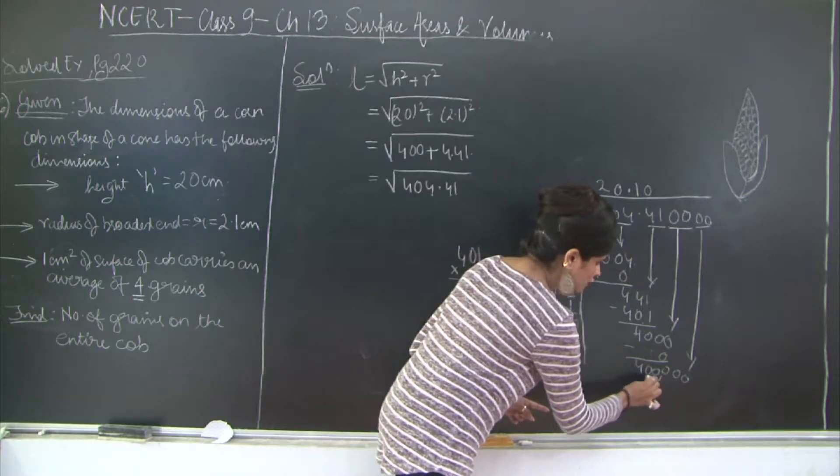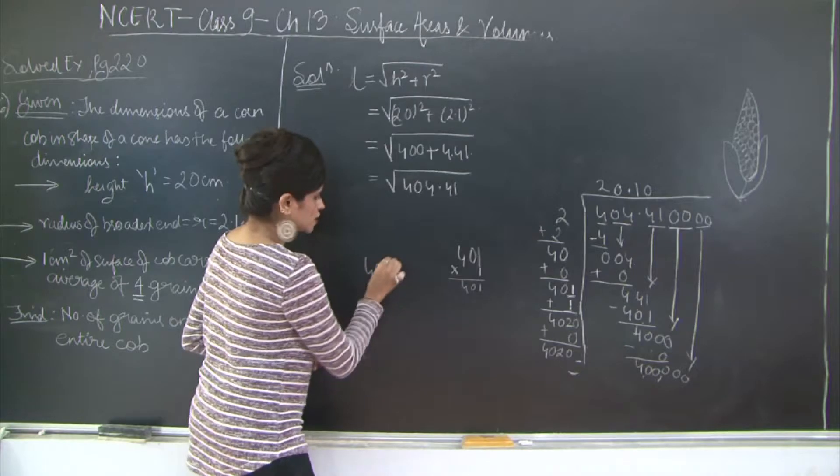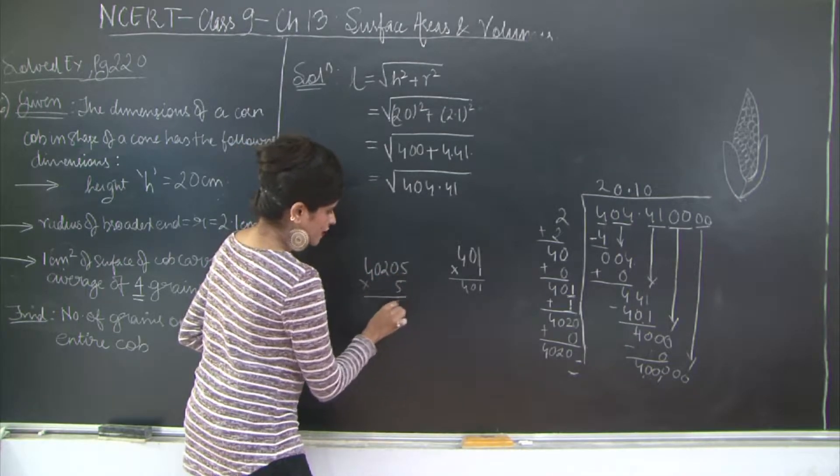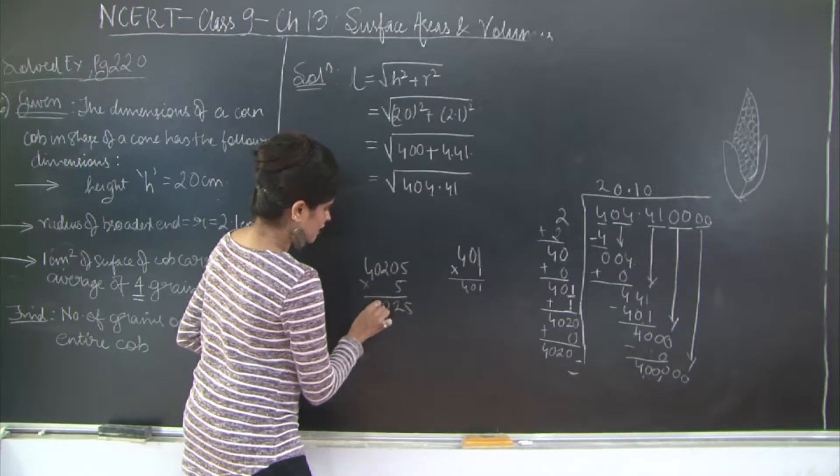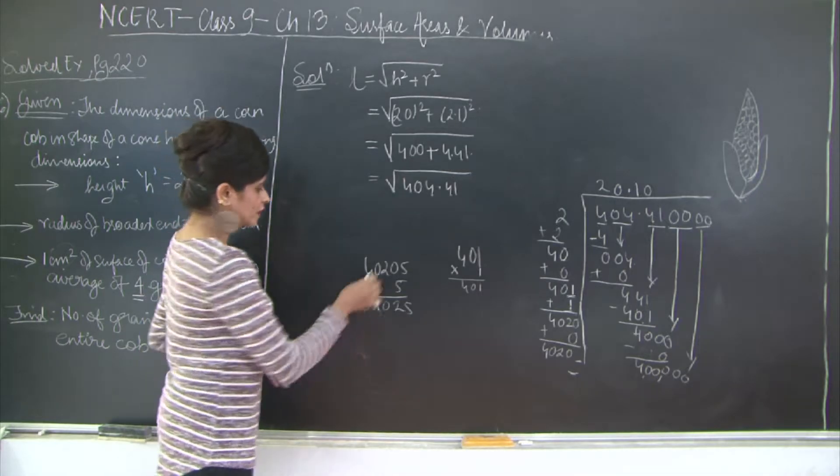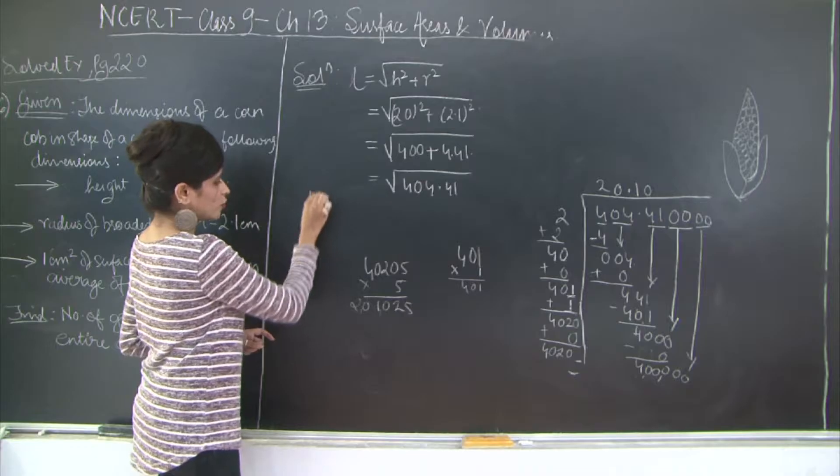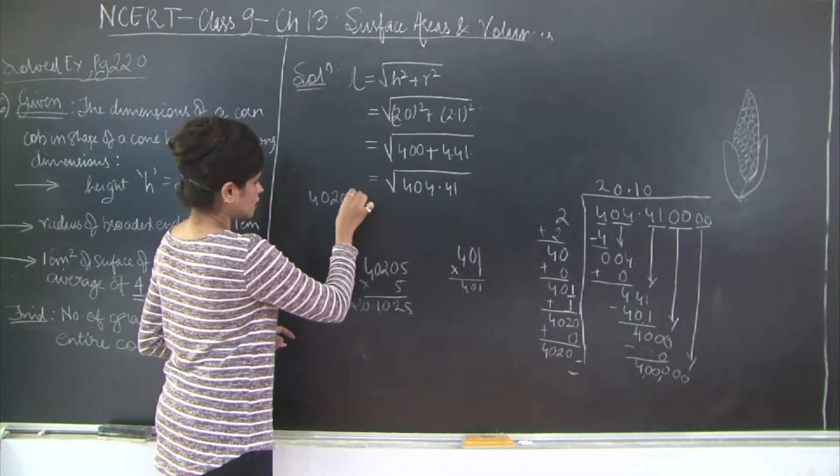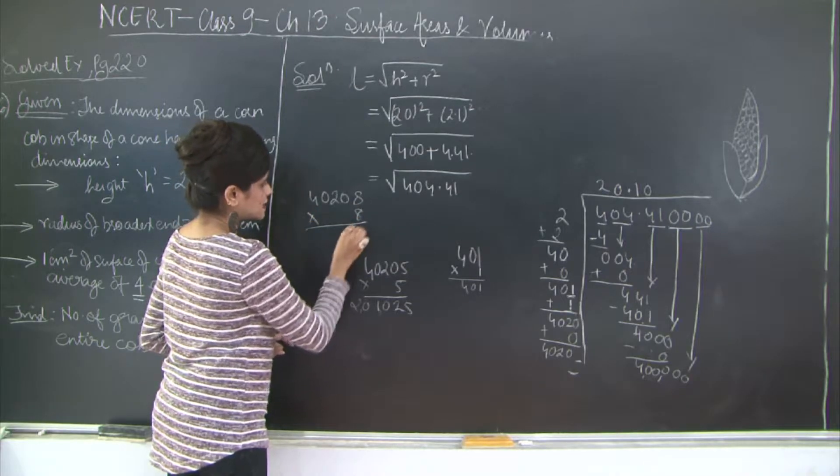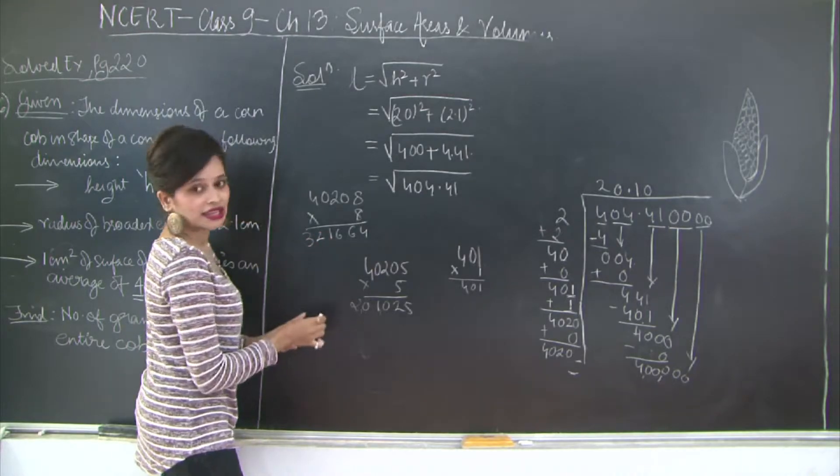So 4020 into 1 number multiplied by the same number should give me a number less than or equal to 400,000. So let's check 40205 into 5: 5 fives are 25, 5 twos are 10, 5 fours are 20, giving me 201,025. Let's check with 40208 into 8: 8 eights are 64, 8 twos are 16, 8 fours are 32. Quite close. Let's check with 9.